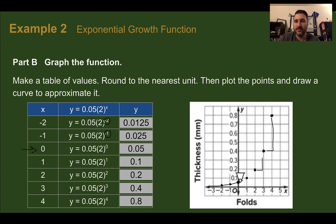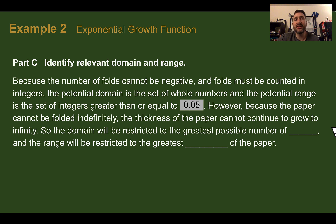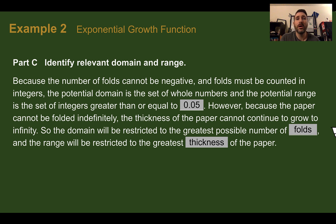We plot the points and draw a curve to model. The exponential function looks like that and keeps getting taller and taller. To identify the relevant domain and range in context: since folding cannot be negative, the domain has to be just greater than zero, while the range can't be any smaller than the starting thickness of 0.05. However, paper cannot be folded over and over forever because we'll run out of paper, so eventually we'd be restricted by the maximum number of folds. Make sure you're really thinking about the possible values you could plug in for x and what you could get out.